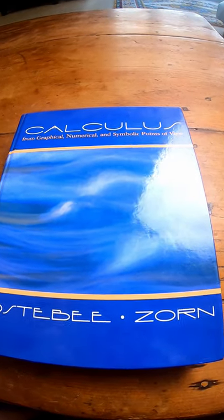Here we have a little-known calculus book. This is Calculus by Ostebi and Zorn. This is actually a pretty good book.